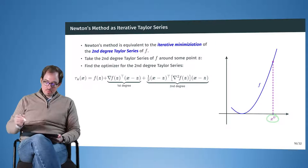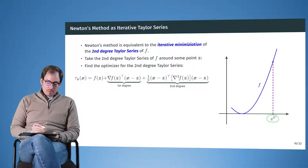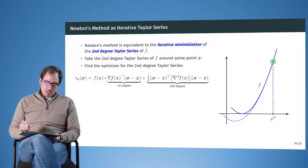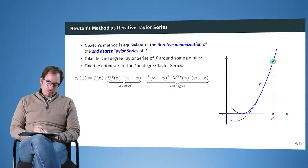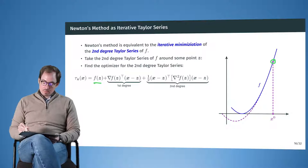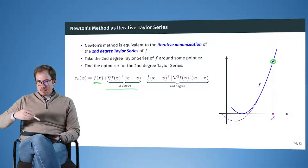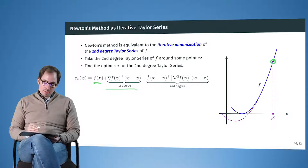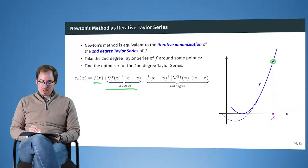And the Taylor expansion, we saw that last week already consists of the position or the value of the function at that point. Then we add to that the subgradient. And in addition to that, we are adding the Hessian times the distance transposed in front and the distance at the end.